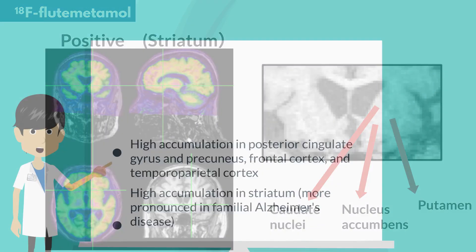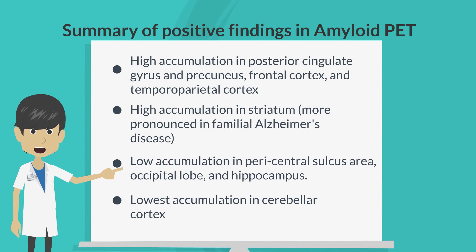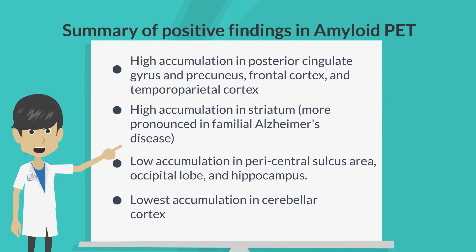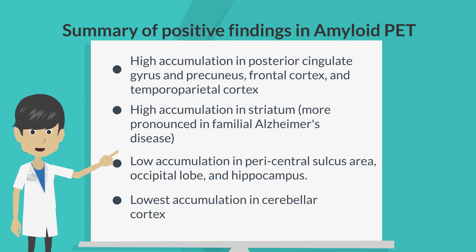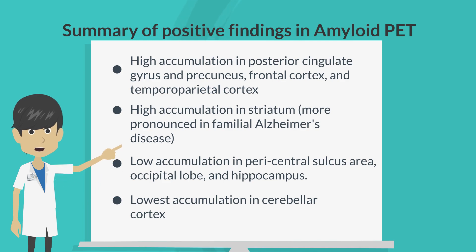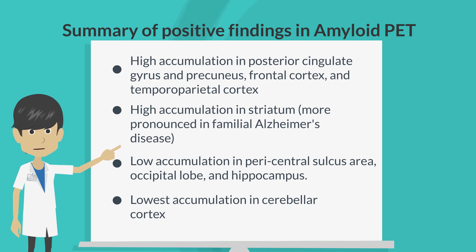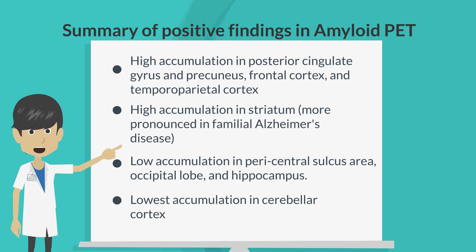To summarize positive findings of amyloid PET: high accumulation is observed in posterior cingulate gyrus and precuneus, frontal cortex, temporoparietal cortex, and striatum. Striatal accumulation is more pronounced in familial Alzheimer's disease. Low accumulation is found in the pericentral sulcus area, occipital lobe, and hippocampus. Cerebellar cortex shows the lowest accumulation.